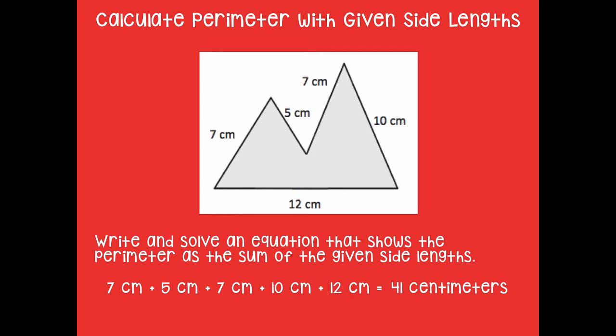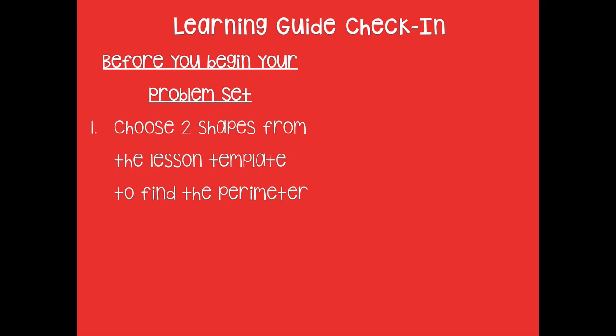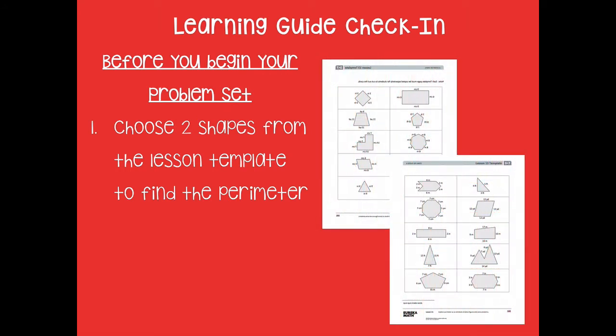Awesome. Now if you didn't get 41 centimeters, just make sure you go back and double check your math. So here we're going to do a learning guide check-in. Before you head off on your own today to do your problem set, you are going to choose two shapes from the lesson template to find the perimeter. Remember those lesson templates that you needed for today. Choose two shapes, any two shapes that you want to.